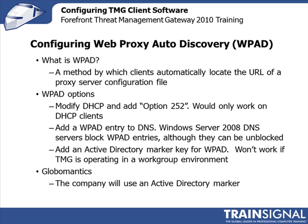There are a number of ways you can configure WPAD. You can add an entry to your DHCP server called Option 252, but that only works if you're using a DHCP client. Right now, GlobalMantics has all statically assigned IP addresses. You can also add a WPAD entry to DNS. However, Windows Server 2008 DNS servers block WPAD entries, although you can reverse this blocking and make it work.